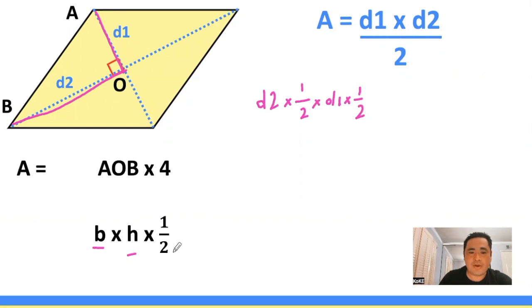And then you have your area formula, which is times a half, so we're going to add that right here. And that's the area of triangle AOB. And don't forget to multiply the entire thing by 4.